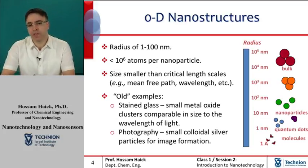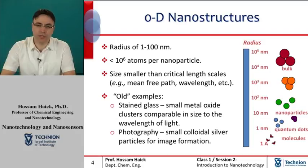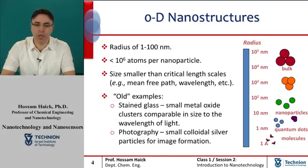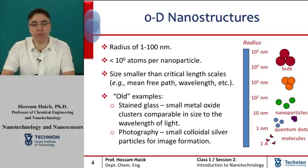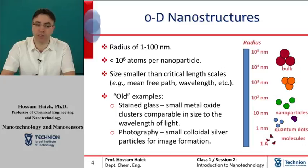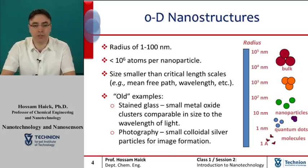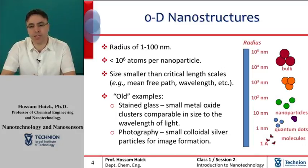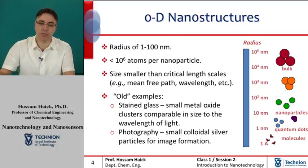For comparison, bulk materials — mainly particles larger than 1 micrometer — contain an insignificant percentage of atoms at the surface in relation to the number of atoms in the bulk of the same material. And therefore, they don't behave or exhibit size-dependent changes in their physical properties.